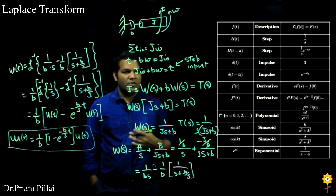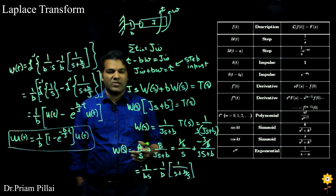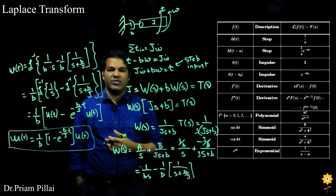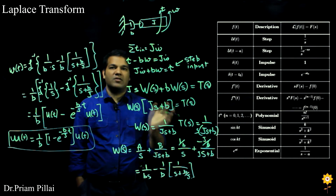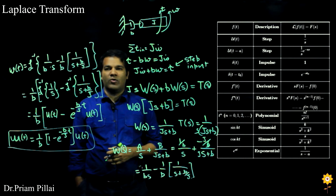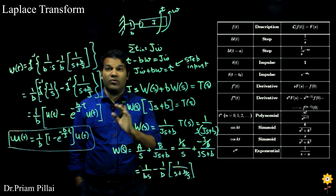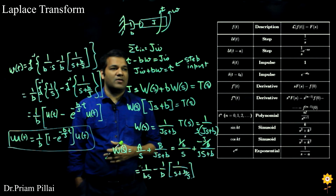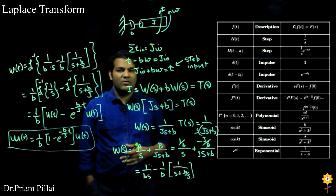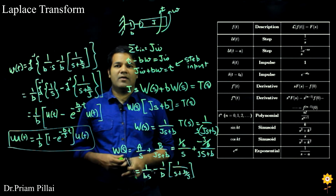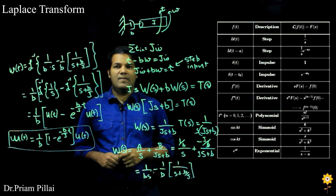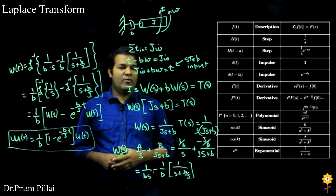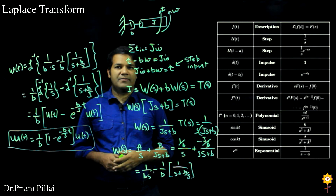Instead of solving complicated integrals, we just write down the polynomial function for omega and then take the inverse Laplace transform of that polynomial to go back into the time domain and get the time-dependent angular velocity. This method is used quite a bit by control engineers to solve these equations, and we will do more complicated equations in the next lecture.